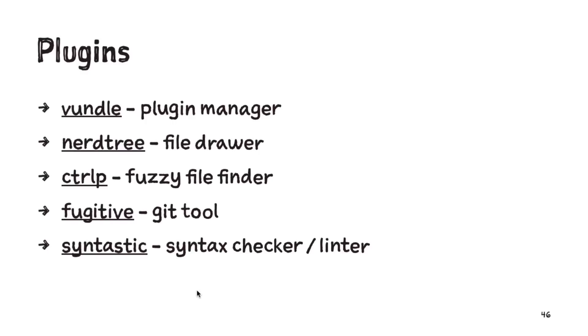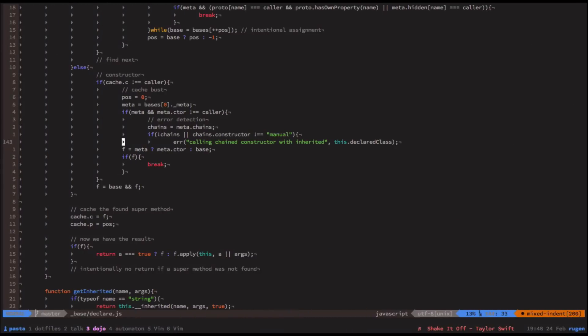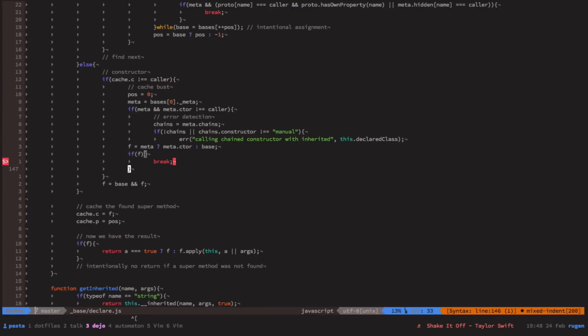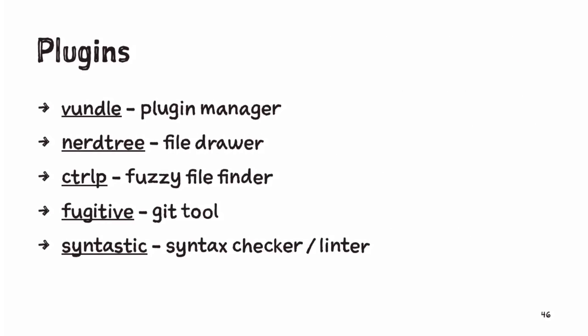For git status, :gstatus shows all changed files. I can hit minus to stage a file for commit, or minus again to unstage it — all without leaving Vim. Syntastic is a linting plugin. I use it with JSHint and JSCS. It checks the file on each save and shows errors in the left margin — for example, 'illegal break statement' or 'foo is defined but never used.' It works with several languages and is highly configurable in your VimRC.